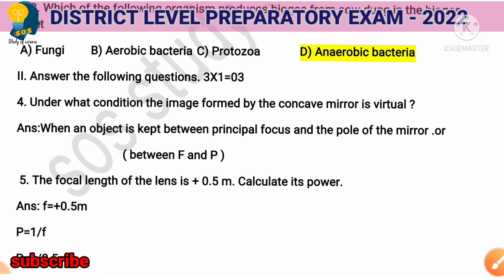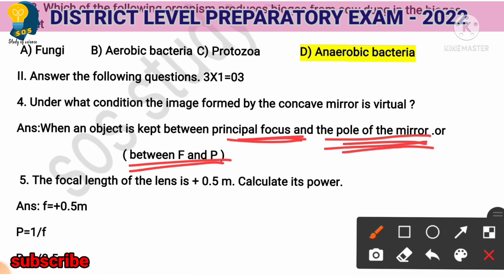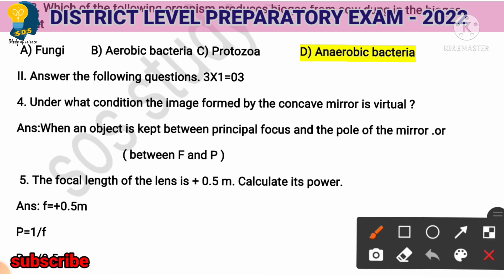Next question: Under what conditions is the image formed by a concave mirror virtual? When an object is kept between the principal focus and the pole of the mirror — between F and P — the image formed by the concave mirror will be virtual. You will mark one mark for this.